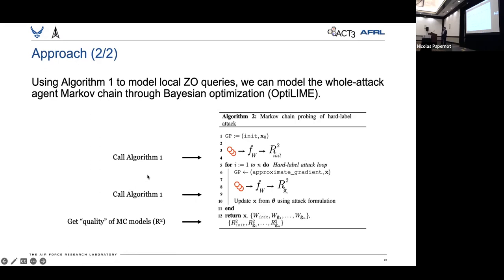And for simplicity, we just consider the initialization stage, which is the first call to algorithm one, and subsequent gradient estimate stages, which is the second call to algorithm one. This will give us a list of quality scores, and this acts as the foundation for the next results you're going to see.